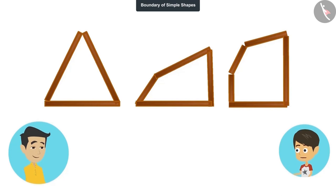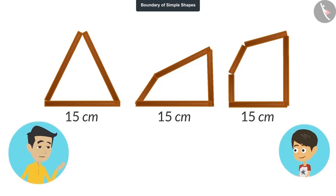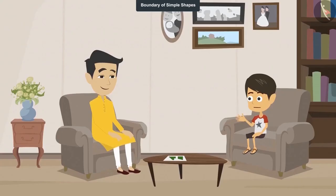Yes. It is very easy. Sticks of 15 centimeters each have been used to make all three shapes. So the length of their boundaries will also be the same. That is 15 centimeters. You see, the shape of these three figures is different. Despite the fact that the length of the boundaries is the same. Now I understand that different shapes can have the same length of boundary.